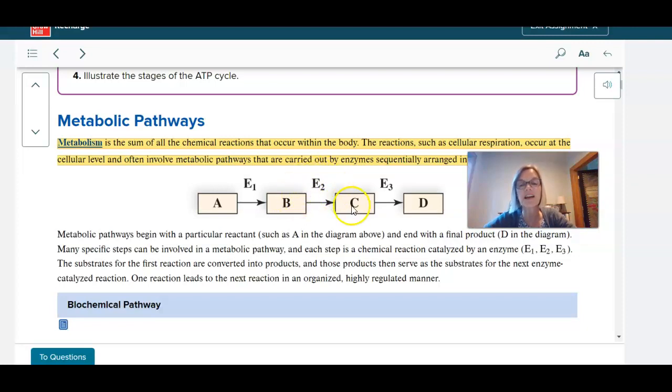Enzyme two converts that into something else, so now I have a new product, and that becomes a substrate for enzyme three and enzyme three creates a product. So we call that a metabolic pathway when we have enzymes working in a series to change a starting molecule to an end product.